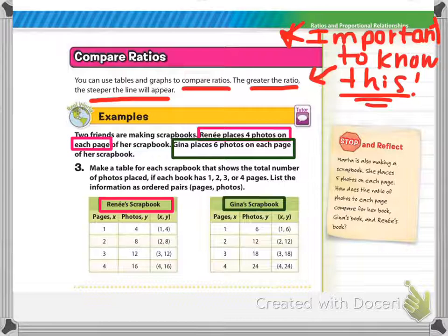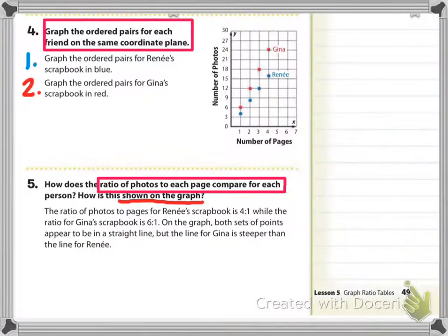For Renee's scrapbook, on one page she has four photos. If she has two pages, that means she has eight photos. Continuing at the same rate, three pages she would have 12 photos, and you can see the pattern. Now Gina's scrapbook is a little different. On her page one she has six photos. Two pages she would have 12, and again continue the pattern. Now look at number four. You'll have to go to the next page, or actually let me go to the next slide.